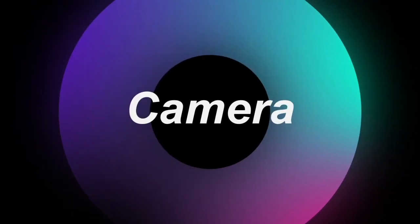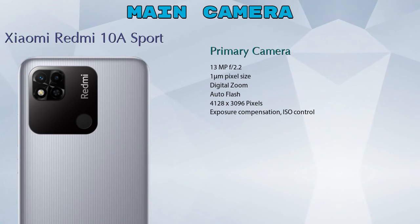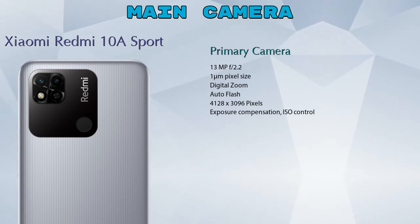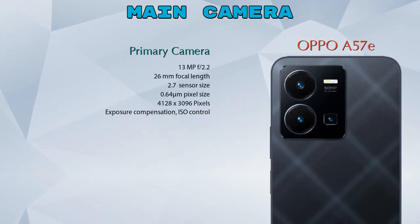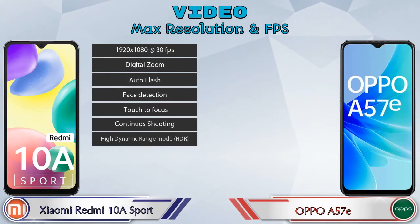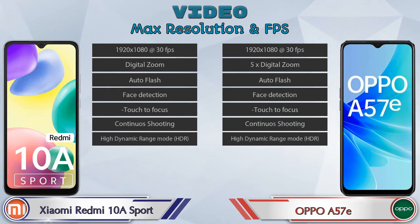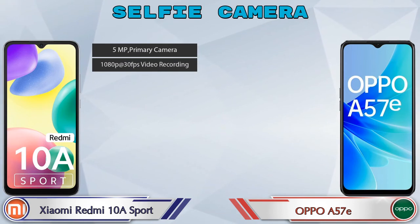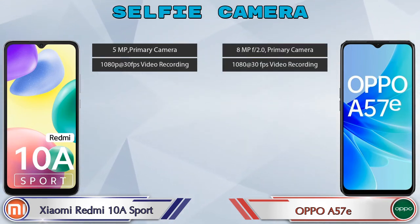Now let's talk about the camera. For the rear camera, the Redmi 10A Sport has one camera which is a primary camera, while the A57e has two cameras — a primary camera and a depth camera. For the video camera, both phones have seven different types of features available. For the front selfie camera, both phones have a single camera with two different features available.